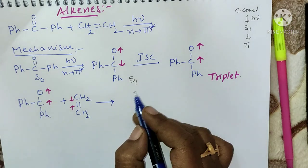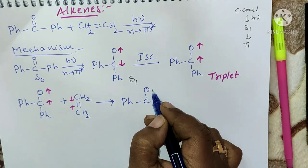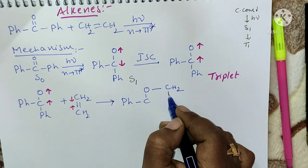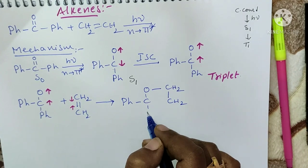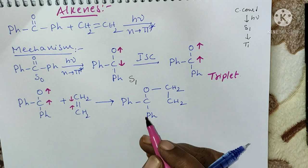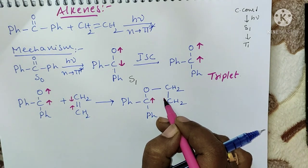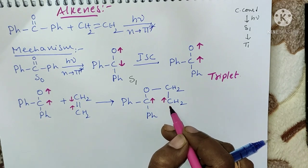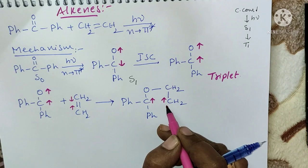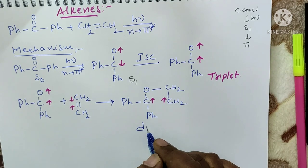A bond forms between the carbonyl oxygen and one CH₂ carbon. Already a single bond is present, giving Ph-C(-O-CH₂)(-CH₂)-Ph. However, the two remaining electrons are in the same spin state and cannot combine together — so this is known as a diradical.